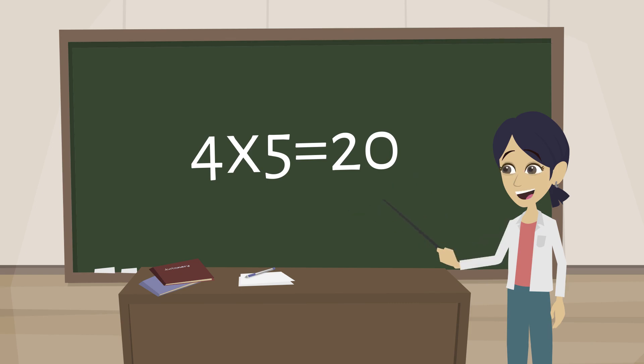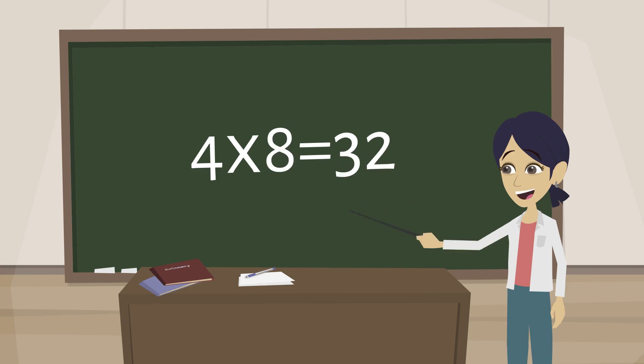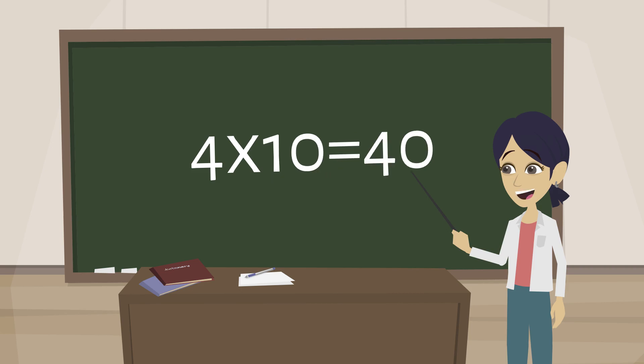4 6s are 24, 4 7s are 28, 4 8s are 32, 4 9s are 36, 4 10s are 40.